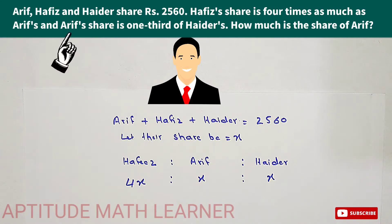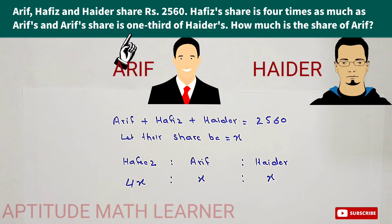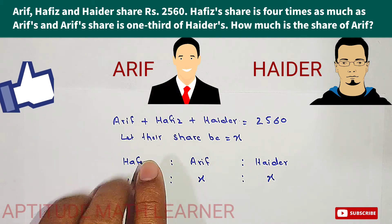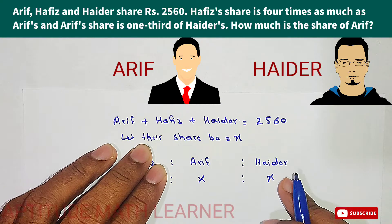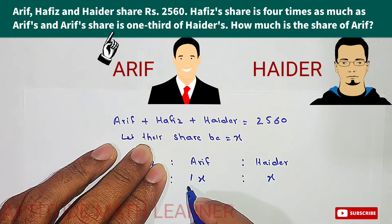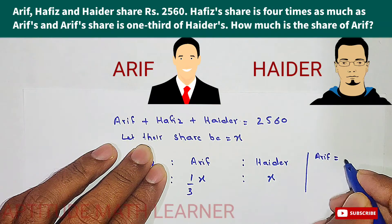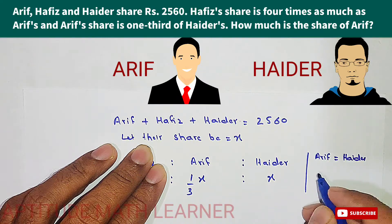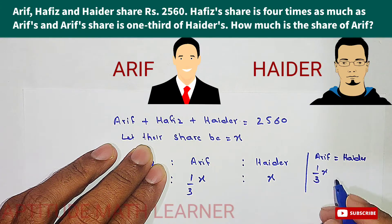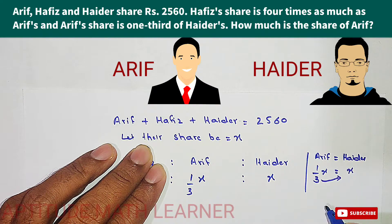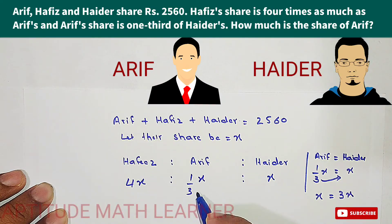In the next part of the question, it says Arif's share is one third of Hader's. We have taken the share for Hafiz and Arif; now the next step is for Arif and Hader. The question says Arif's share is one third of Hader's, so x equals one third of Hader, which means Hader equals three x.